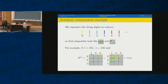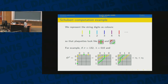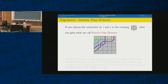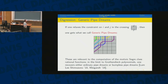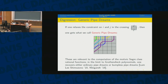These pipe dreams live in the northwest triangle — it seems wasteful to use the whole square. More generally, you can consider generic pipe dreams where you relax the constraint on i and j in the crossing. These fill the full square and are needed for computing motivic Segre class rational functions. Taking limits recovers ordinary (reduced) pipe dreams for Schubert polynomials or bumpless pipe dreams, which were also discussed yesterday.